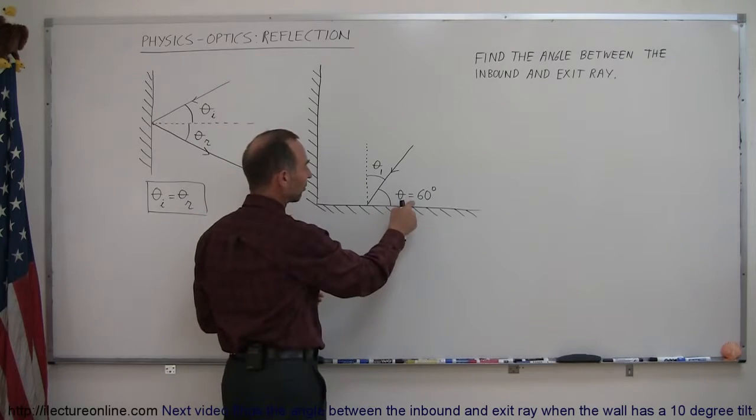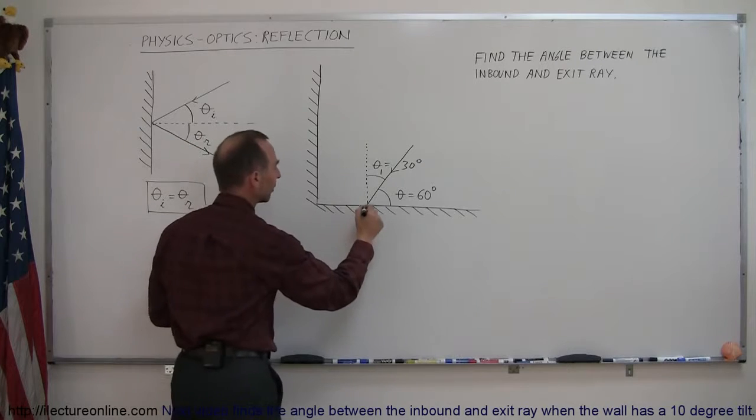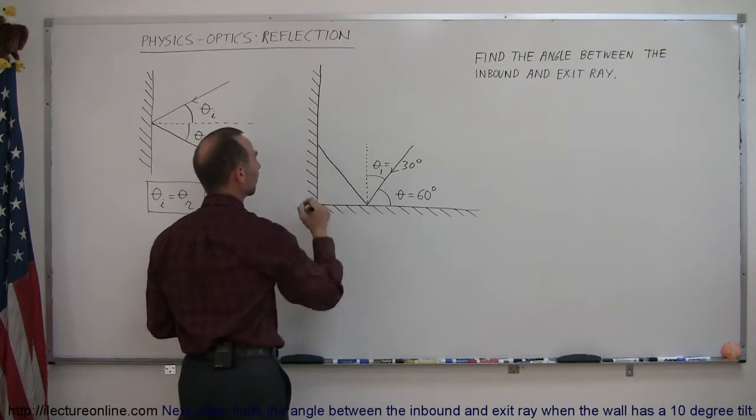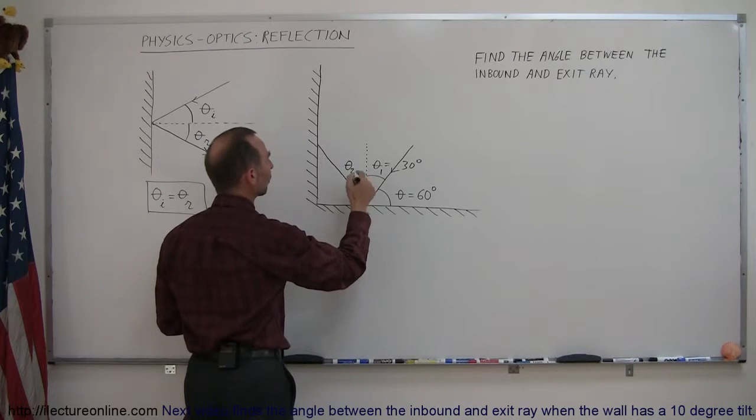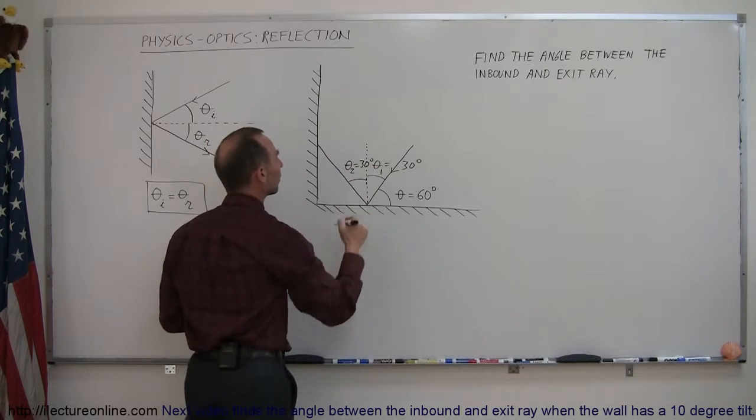So of course, if this is 60 degrees, then this must be equal to 30 degrees. And then it's going to reflect, the rays will reflect in this direction, until it hits this side right here. And so this is then the reflected angle, theta sub 2, and of course, theta sub 2 must also equal theta sub 1, which is 30 degrees.